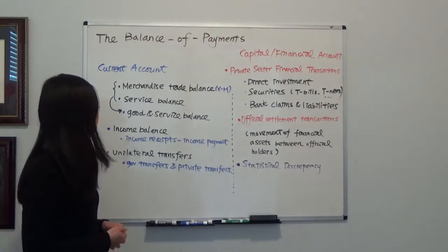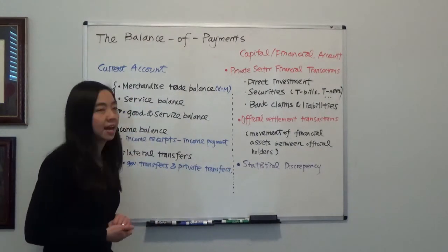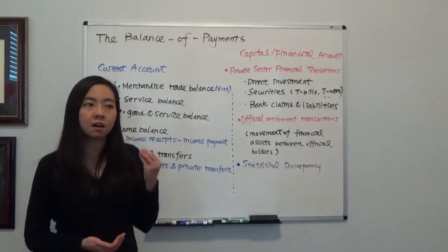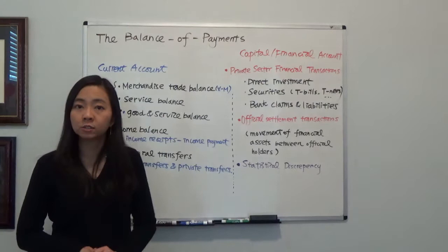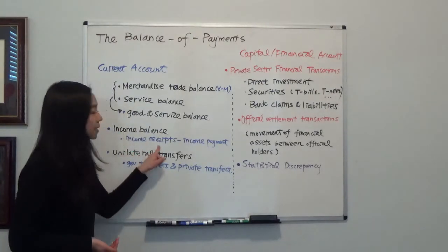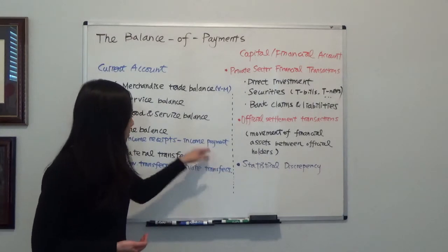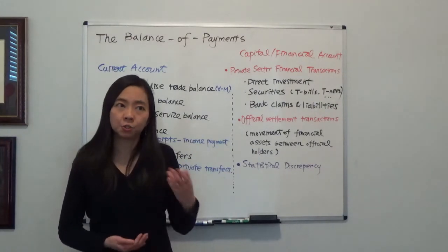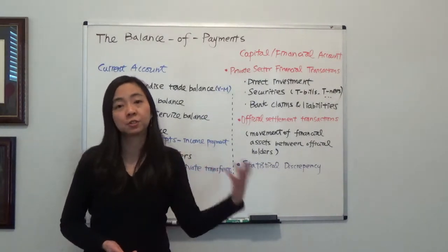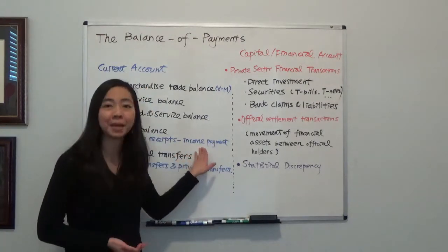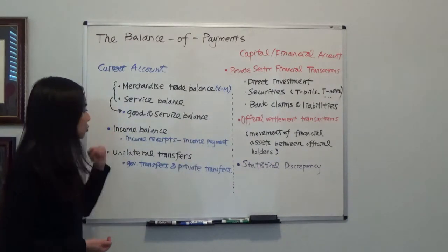The second component is income balance. Income balance is equal to income receipts minus income payments. So what is income receipts? Suppose we have some U.S. resident holding on to a Chinese stock, and when the Chinese firm is paying dividends to the U.S. resident, then that will be our income receipts. What about income payment? Suppose there is a European investor who has some Apple stock, and when Apple is paying dividends to this European investor, then that will be our income payment. So income receipts minus income payment equals our income balance.